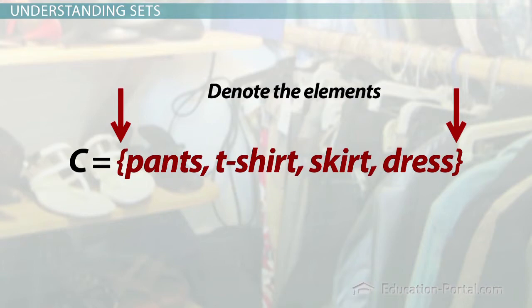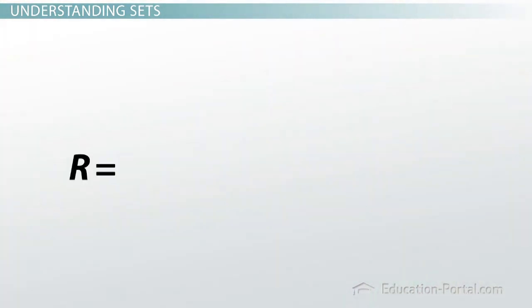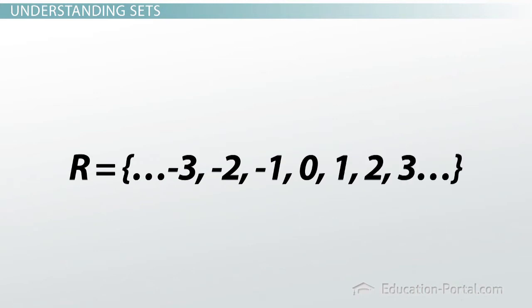You are probably familiar with the set of real numbers. The three dots are used to indicate the pattern continues. The elements of this group are all real numbers. So R equals the set of real numbers.